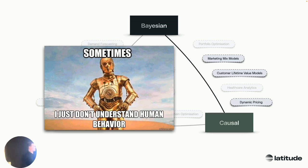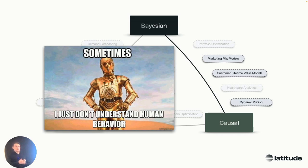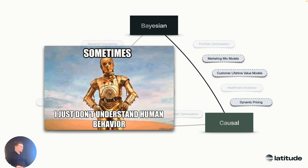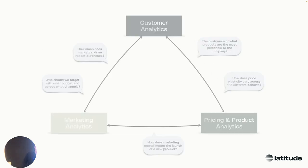The use cases I want to focus on are marketing mix, customer lifetime value, and dynamic pricing — what I put in the description of the talk. It's always when there's a lot of human interaction involved that it becomes very uncertain and you need to know what choices would have happened. Dynamic pricing: what would we have sold if we had priced it differently? Customer lifetime value models and marketing mix models — those two we will dive into a bit.